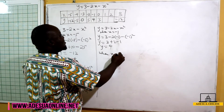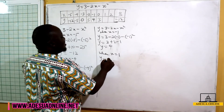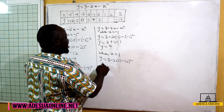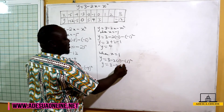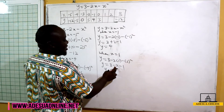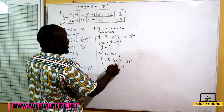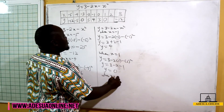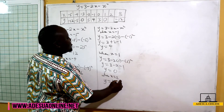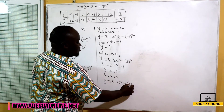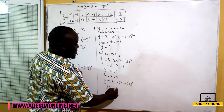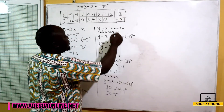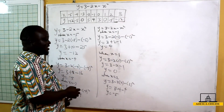When x equals 1, y equals 3 minus 2 times 1 minus 1 squared, giving us 3 minus 2 minus 1, which equals 0. When x equals 2, y equals 3 minus 2 times 2 minus 2 squared, giving us 3 minus 4 minus 4, which equals negative 5. That completes our table.